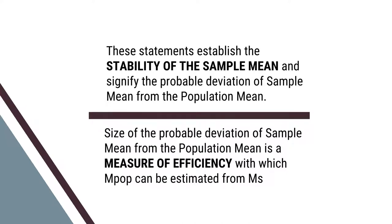These statements establish the stability of sample mean and signify the probable deviation of sample mean from the population mean. The size of the probable deviation of sample mean from the population mean is a measure of efficiency with which the population mean can be estimated from the sample mean. This is very important. Now let us consider the same aspect with another example.